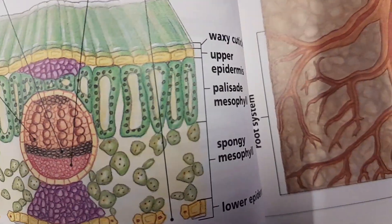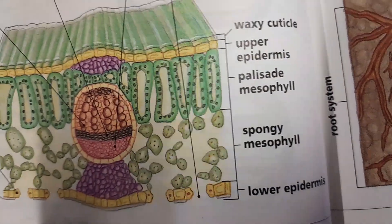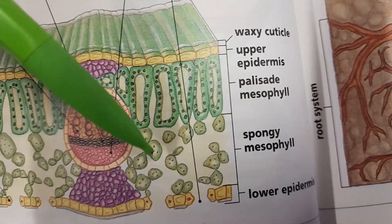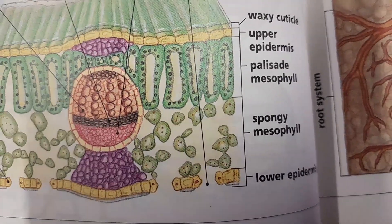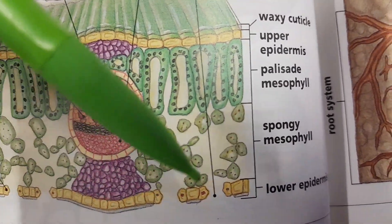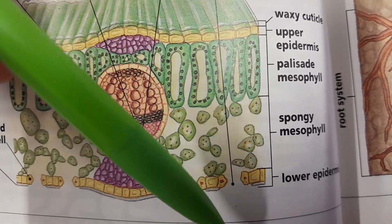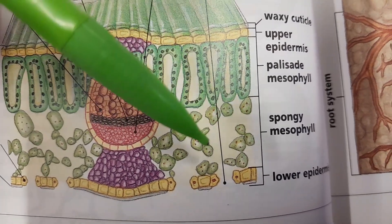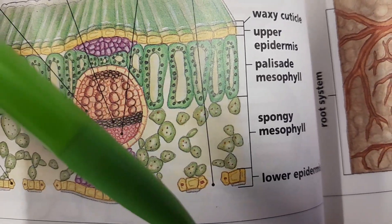Underneath our palisade layer we have got something called the spongy mesophyll — I love that word mesophyll, it's gorgeous isn't it? And it's spongy because it's got lots and lots of air holes in it. Remember the two things we need for photosynthesis are carbon dioxide and water, so our carbon dioxide gas has to get in, and it gets in through the little holes or stomata at the bottom. And it's all in the spongy mesophyll at this point, and then the oxygen that's made can leave through the same way.